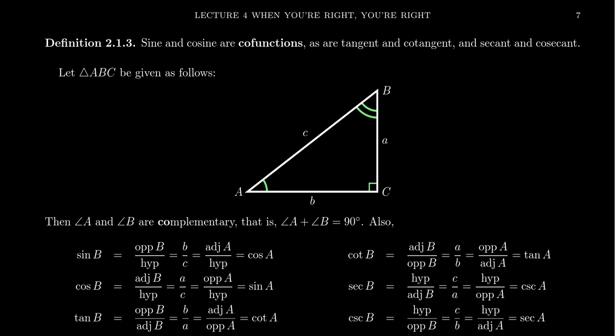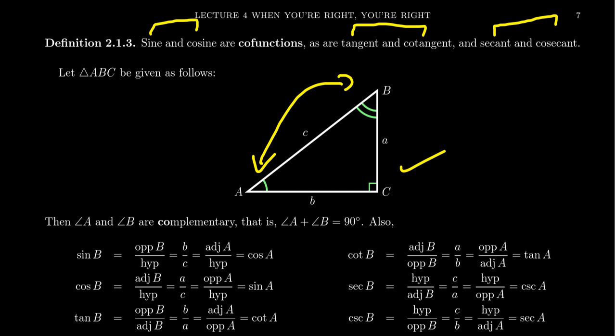Every trigonometric function comes with a complement. Sine is the complement of cosine and vice versa; cotangent is the complement of tangent; secant and cosecant are complements of each other. The reason we call them complements actually comes from complementary angles. If we take a right triangle ABC, because the sum of angle measures is always 180 degrees, and angle C is 90 degrees, the other two angles A and B must add up to 90 degrees — they are always complementary angles.